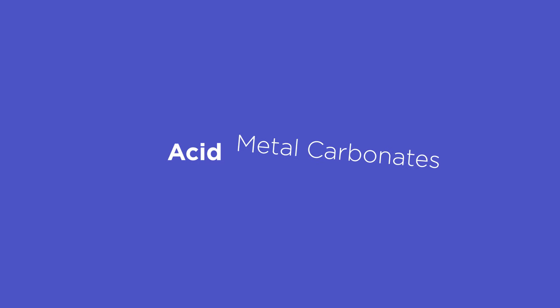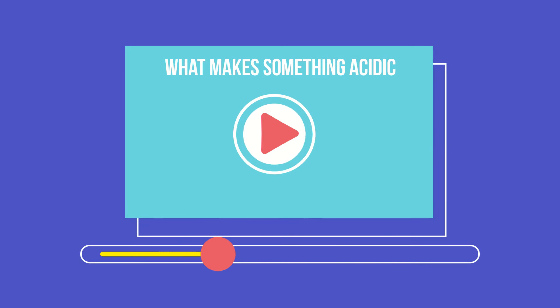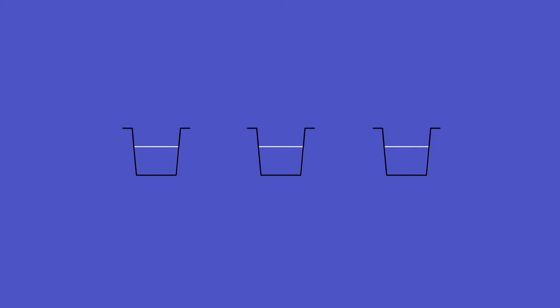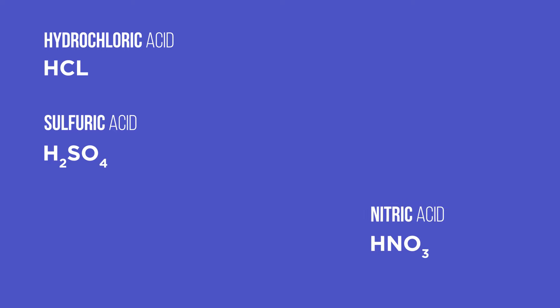In this video we will explore the reaction between acids and metal carbonates. Recall that an acid is a chemical that contains a special type of hydrogen that can be released into aqueous solution as a hydrogen ion, H positive. The most commonly used acids in the laboratory tend to be hydrochloric, sulfuric and nitric.